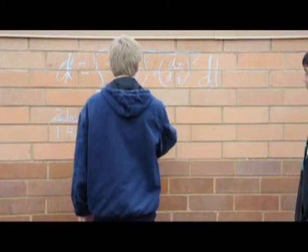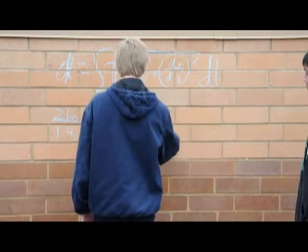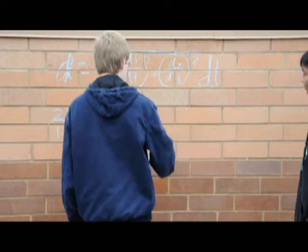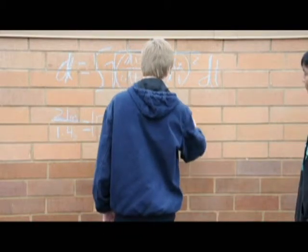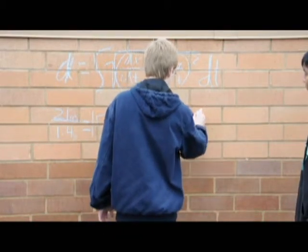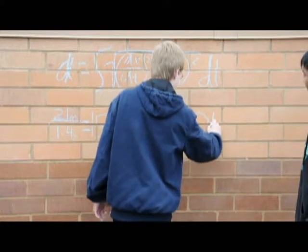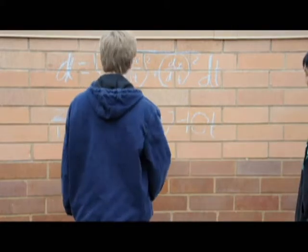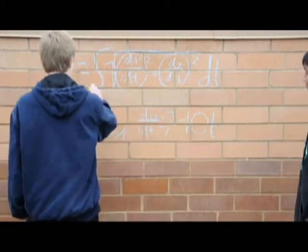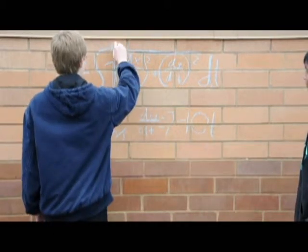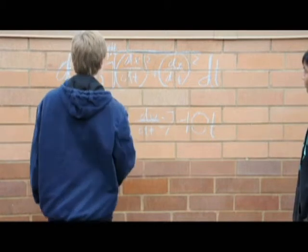Our equation is going to be dy/dt equals 7 minus 10t, where gravity is about 10 meters per second. Because it's 1.4 seconds, it goes to 10 meters per second. So the integral bounds are from 0 to 1.4.